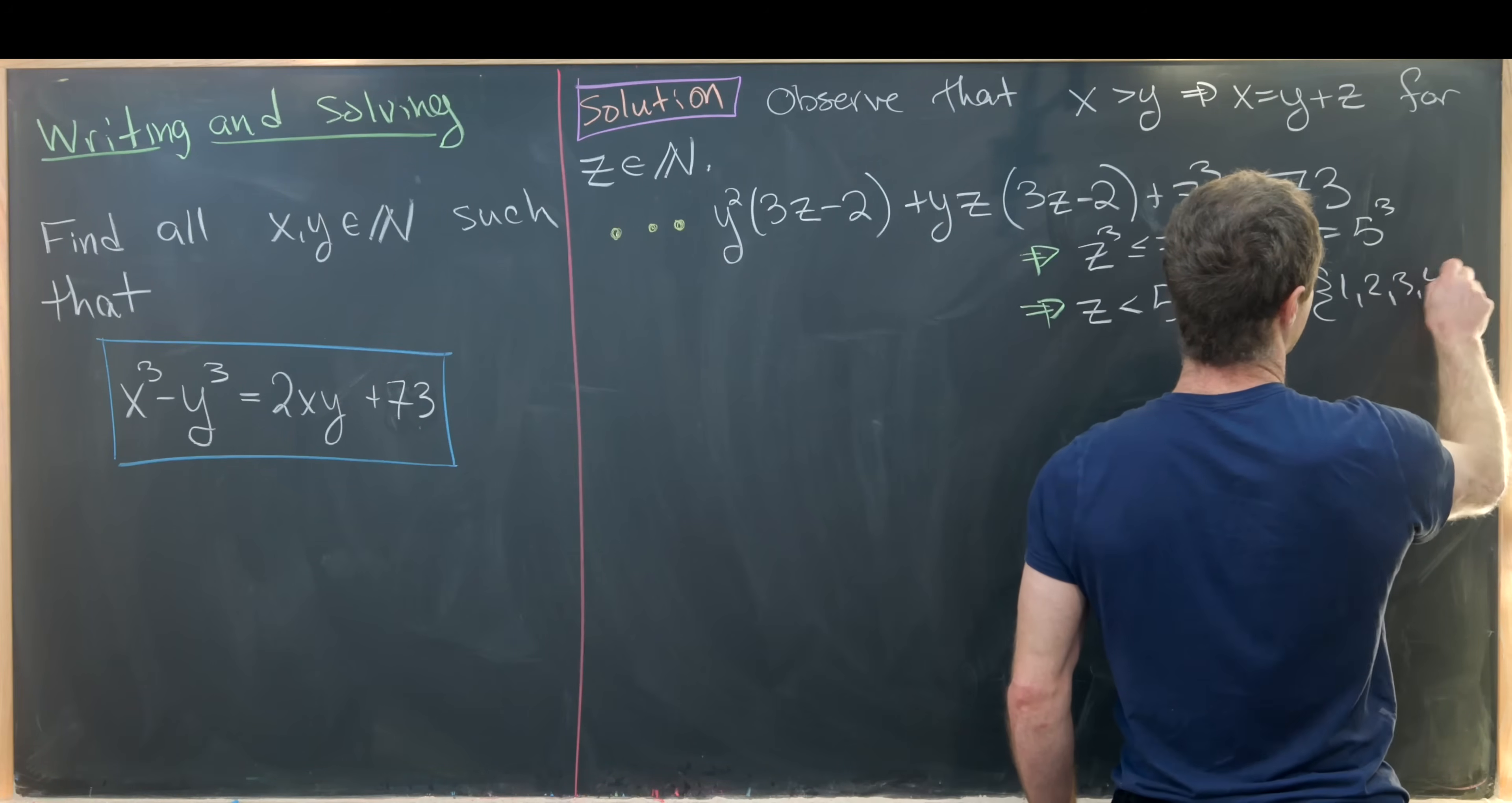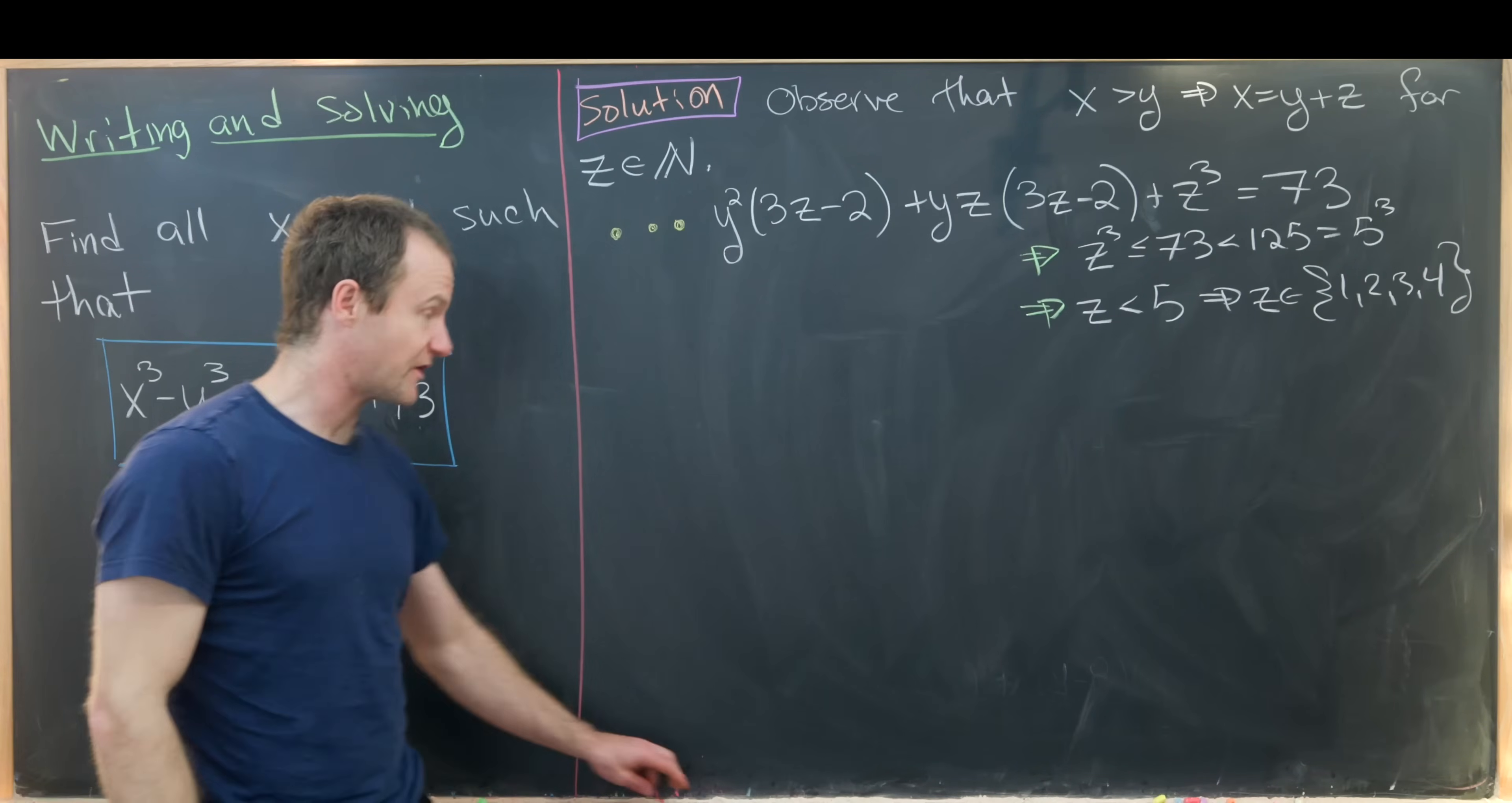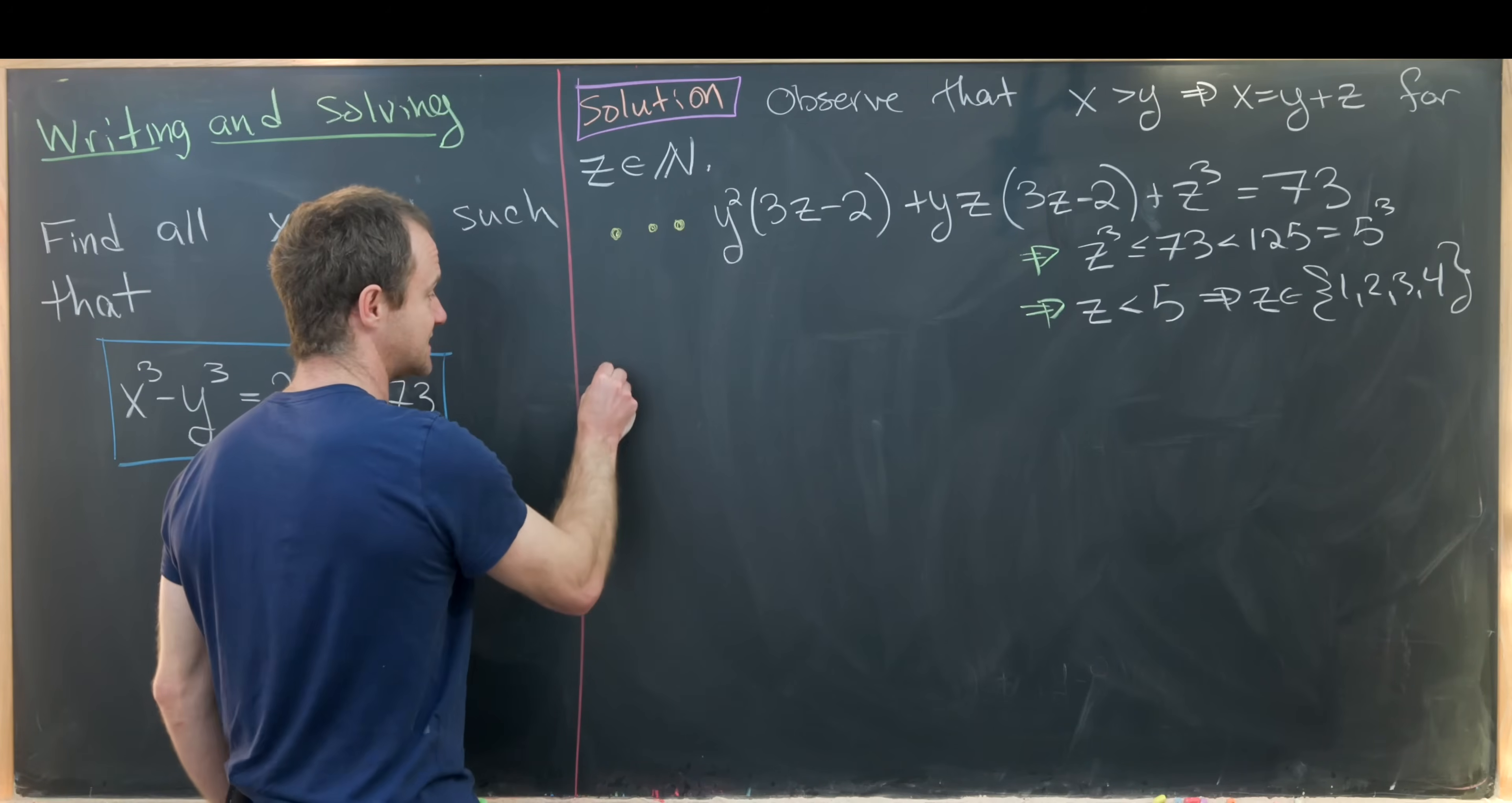So let's notice that this tells us that z is strictly less than 5. That means z comes from the set {1, 2, 3, 4}. And now that we've got it down to a manageable number of values of z, we can split this into cases.